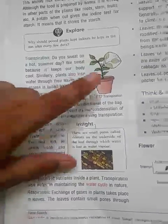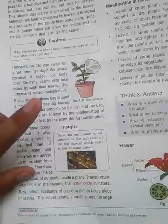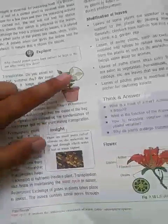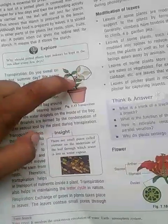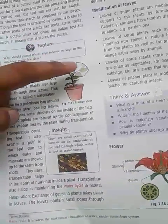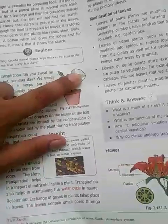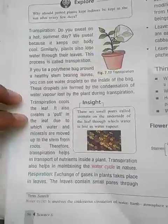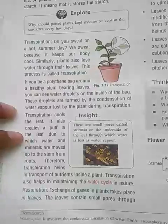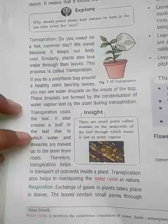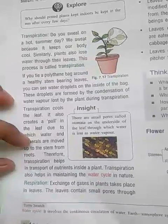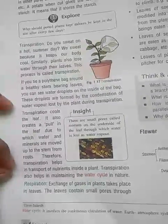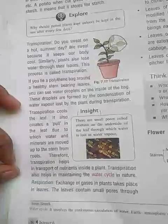To observe this activity, you can tie a polythene bag above the leaves. The next morning you will find some water droplets in the polybag, which shows the transpiration process. Transpiration cools the leaves. It also creates a pull in the leaves, due to which water and minerals move up through the stems from the roots. Transpiration therefore helps in the transportation of nutrients and water in plants.